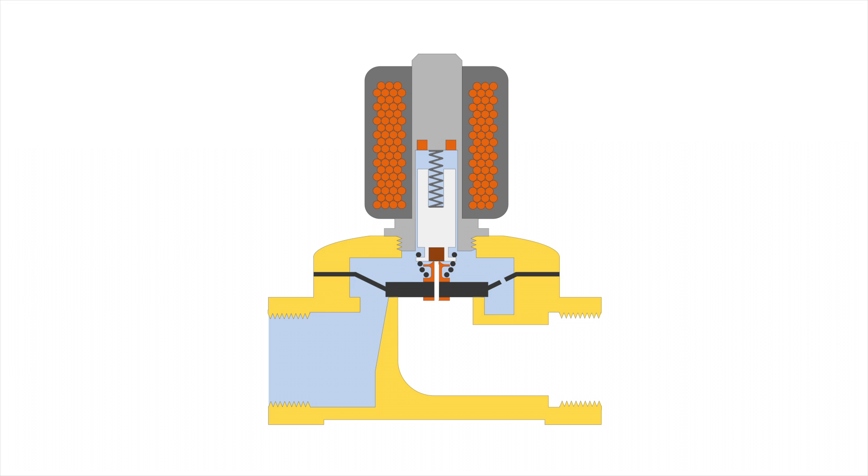A solenoid is used to control the position of the membrane. As soon as the electric coil is energized, a magnetic field is created. The plunger is ferromagnetic and will be pulled towards the center of the coil. The plunger is connected to the membrane via a spring. As the plunger is pulled upwards, the membrane is lifted and the valve opens.